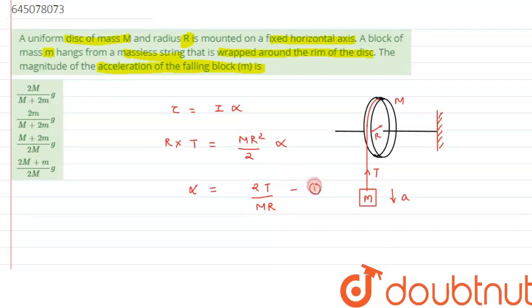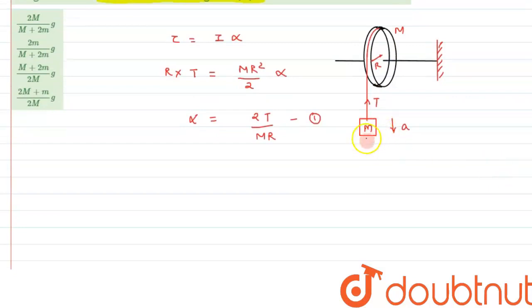Now we can make the free body diagram of this small block. The forces acting on this block are: tension in the upward direction, weight mg in the downward direction, and it is accelerated downward with acceleration a.